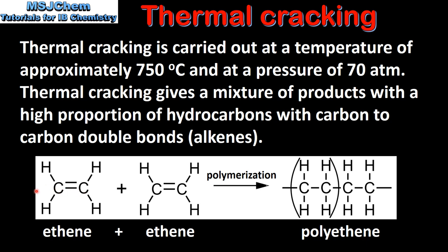Unsaturated hydrocarbons with carbon-to-carbon double bonds can be used to make plastics. In this example we have ethene undergoing a polymerization reaction to form polyethene. Polyethene is a plastic with a wide range of uses.